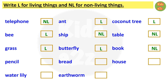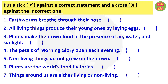In this worksheet, kids need to put a tick mark against a correct statement and cross out the incorrect one. Statement 1: earthworms breathe through their nose — this is incorrect, so they need to put a cross. Statement 2: all living things produce their young ones by laying eggs — this is also incorrect.